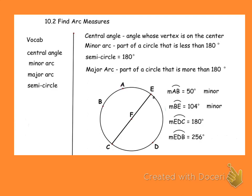Let's look at arc EDC. Arc EDC is given to us as 180 degrees, so that would be a semicircle. Notice when I label this arc EDC, that third letter adds direction — it gives me a starting point of E, a finishing point of C, but I have to go through D, and that's how I get EDC. If I went the other direction, it would be EBC.